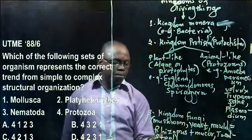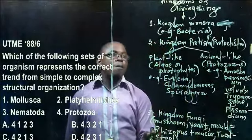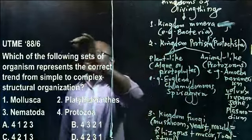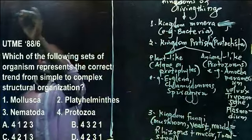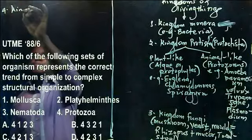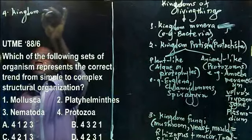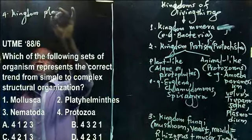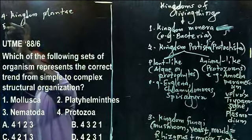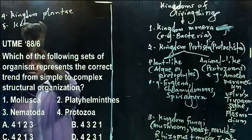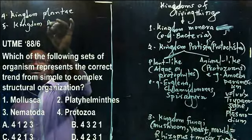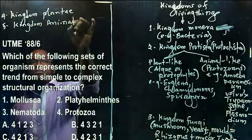The fourth kingdom is Kingdom Plantae, which we've already dealt with. Then the last kingdom of living things is Kingdom Animalia.